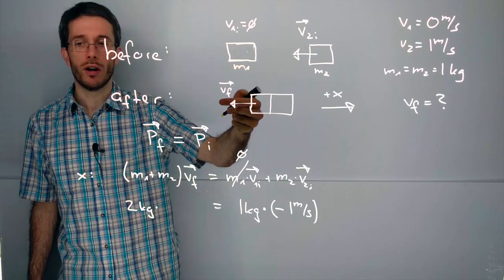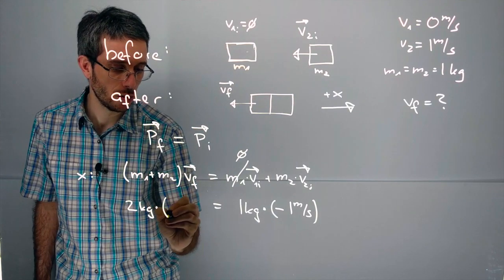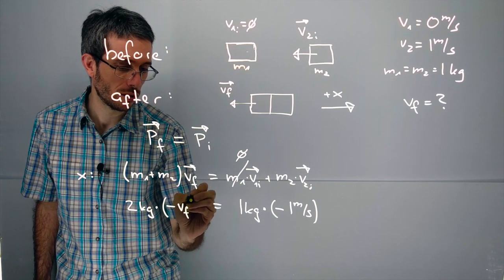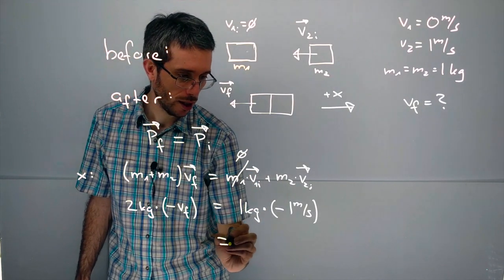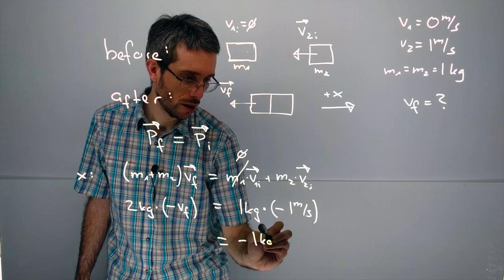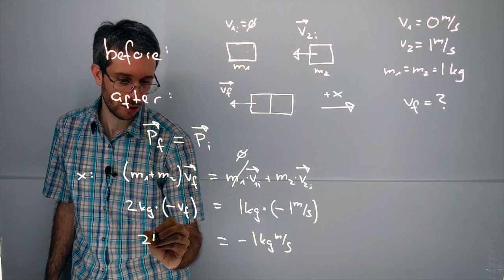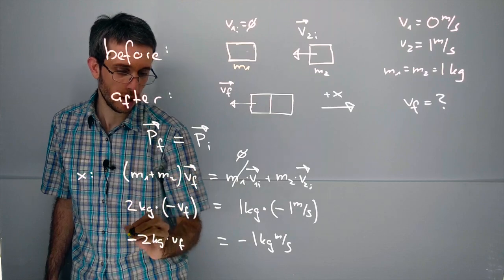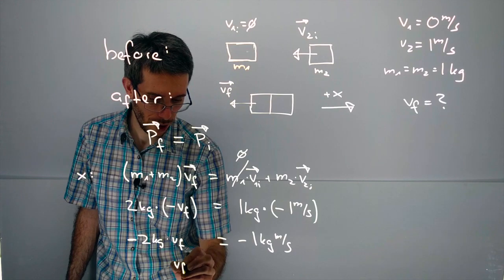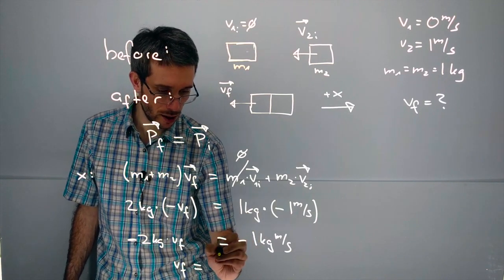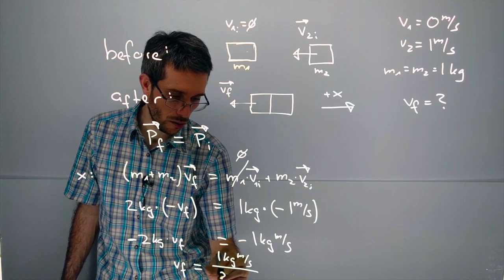Now according to my drawing the v final is to the left therefore I would have to choose minus v final here according to my coordinate system. So what do I get? I get minus 1 kg meters per second equals 2 kg times v final. So I divide by the minus 2 kg and I get the final speed is 1 kg meters per second divided by 2 kg.